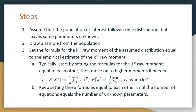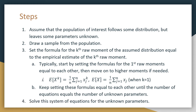The formulas are listed below. Typically start by setting the formula of the first raw moment, then go to the second, third, or whatever you need depending on how many unknown parameters you have. Keep setting these formulas equal to each other until the number of equations equals the number of unknown parameters. If we only have one unknown parameter, then we only need to use the first raw moment equal to the empirical mean. The final step is to solve the system of equations for the unknown parameters.